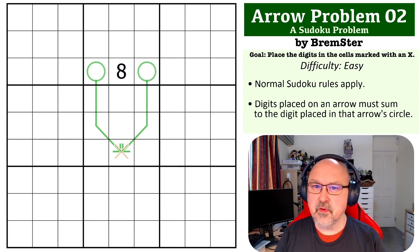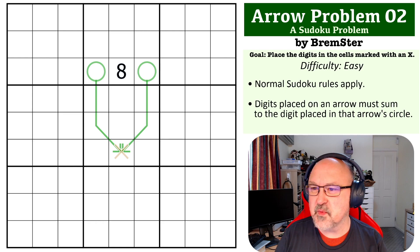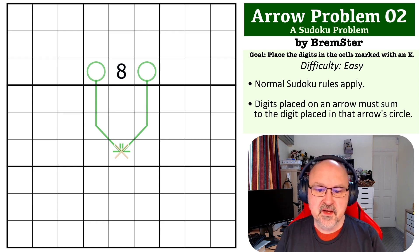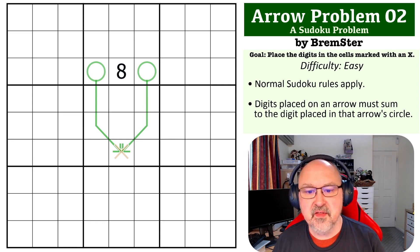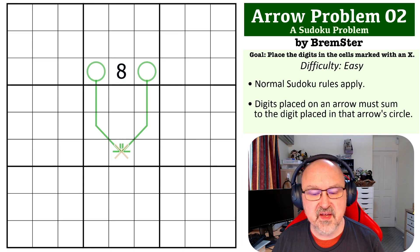This one hopefully won't be too hard for most people, but a couple of the testers had to think about this one a bit, so we'll see how it goes. So the goal of this one is to use the arrow logic and to put the digit that can be resolved into the cell with the X.